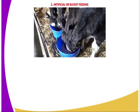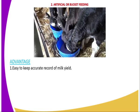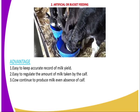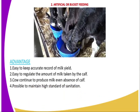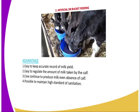Next is the artificial or bucket feeding method. The advantages include: number one, easy to keep accurate records of milk yield; number two, easy to regulate the amount of milk taken by the calf; number three, the cow continues to produce milk even in the absence of the calf because the cow becomes used to it without seeing the calf, so the milk let-down system will not be affected; and number four, it is possible to maintain a high standard of sanitation.